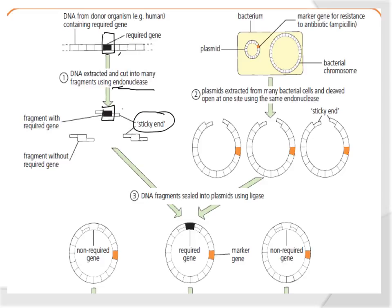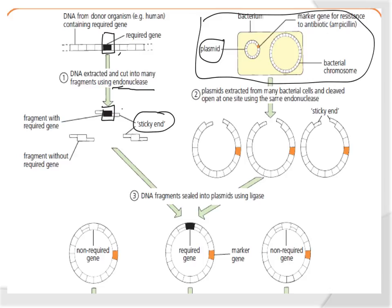We've got our bacterium that we're going to genetically modify, and we've got our plasmid that we want to cut open. Again we use this endonuclease - it's an enzyme that will cut open the DNA and cuts open our plasmid, giving us sticky ends. You'll also notice there's a marker gene for resistance to an antibiotic. We're using bacteria that already has this gene in the plasmid, and we'll see why shortly.